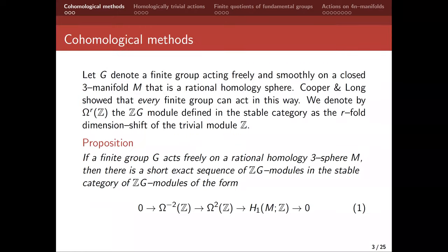So let me start out setting this up. It's going to be heavily cohomological — that's the approach we're taking. So G is going to denote a finite group, and we reserve G for finite. There will be some gammas later which will possibly be infinite. And assume G is acting freely and smoothly on a three-manifold that is a rational homology sphere — meaning the rational homology is the same as that of the three-sphere, so whatever doesn't appear at the top is going to be torsion over the integers.